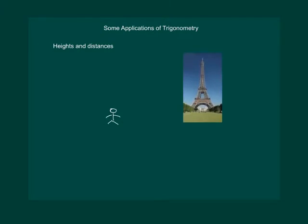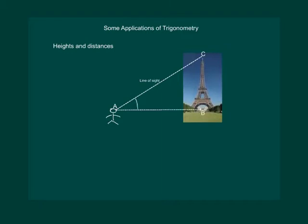Say a student is looking at the top of a tower. Then the line drawn from the eye of the student to the top of the tower is called the line of sight. And the angle so formed, i.e. angle BAC, is called the angle of elevation of the top of the tower from the sight of the student.